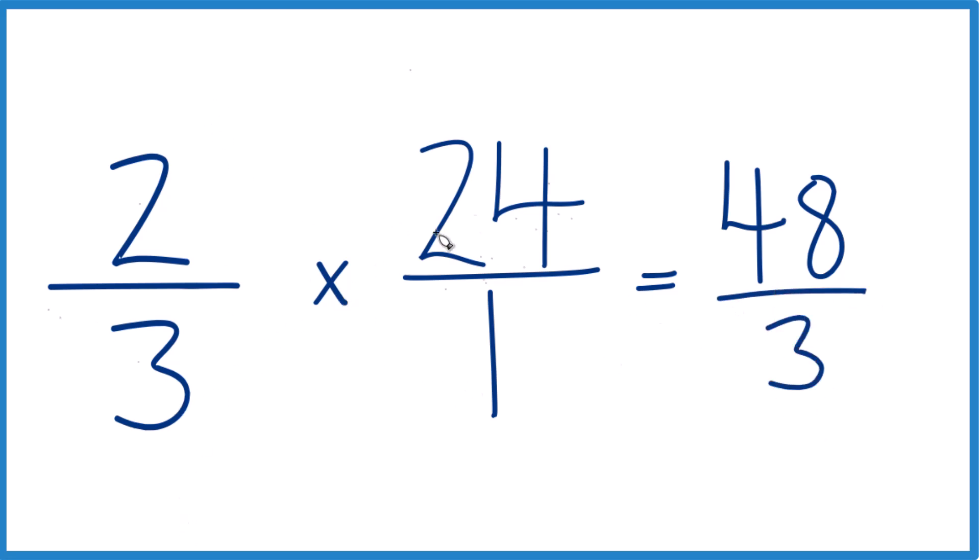So two-thirds times 24, or 24 over 1, that's 48 over 3. This is an improper fraction. 48, that's larger than 3. So actually 3 goes into 48.